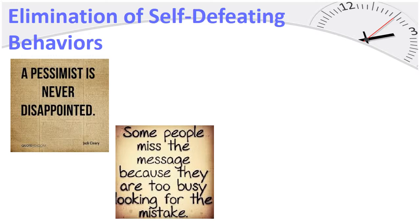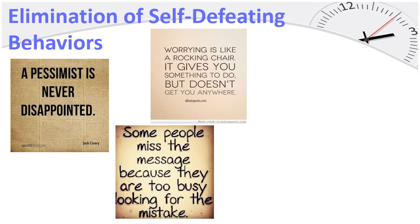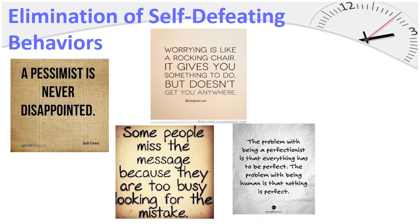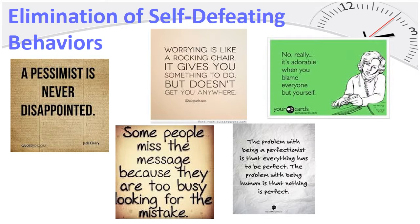If you have done your best, listened to your inner voice of reason, and made your decision based on the evidence at hand — stop worrying! Worrying is like a rocking chair: it gives you something to do, but it doesn't get you anywhere. No one is perfect. The perfectionist practices self-defeating behavior often as a way to procrastinate. Set goals that are realistic and go for it. The problem with being a perfectionist is that everything has to be perfect; the problem with being human is that nothing is perfect.